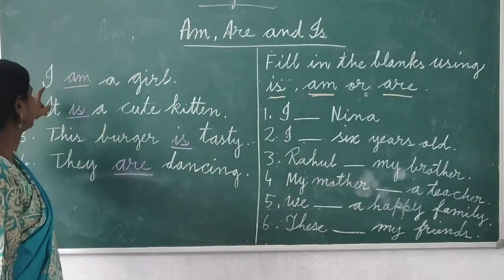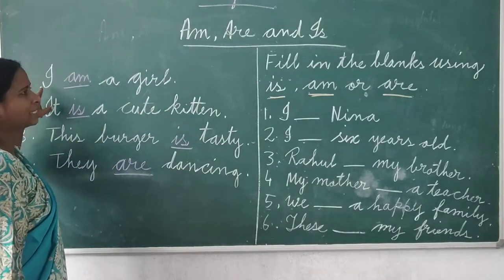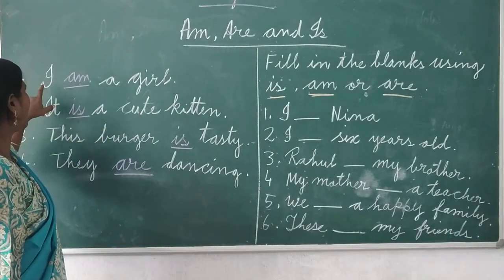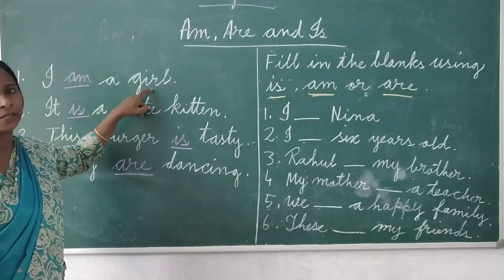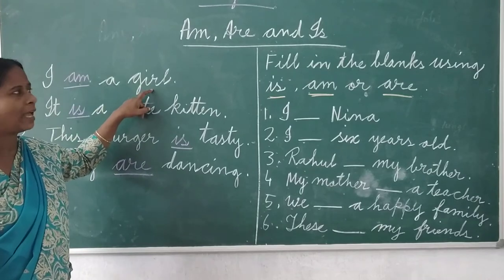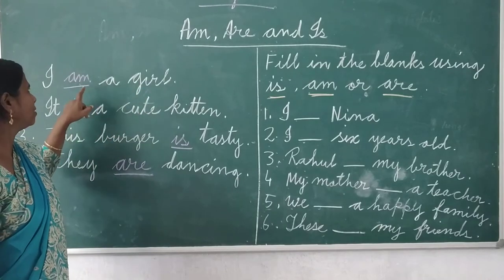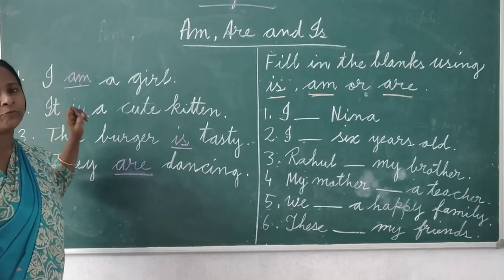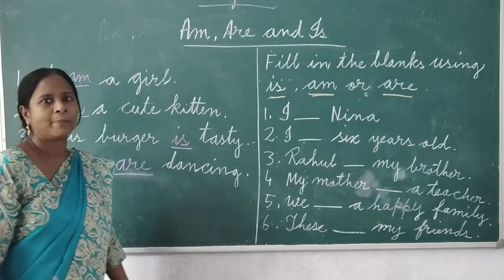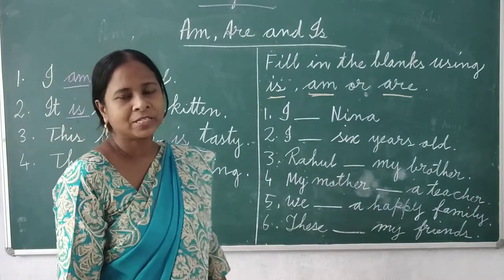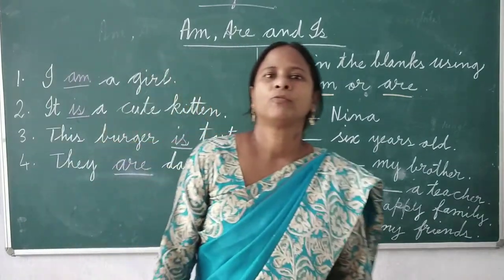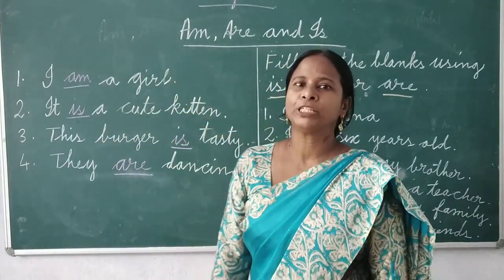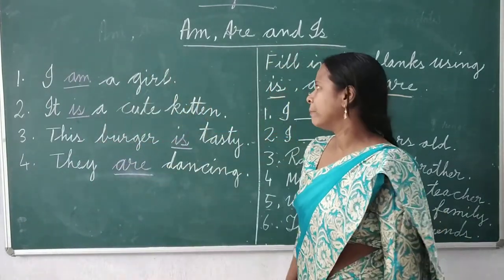Here is an example: I am a girl. We use 'am' when we talk about ourselves — we have to use 'am'.